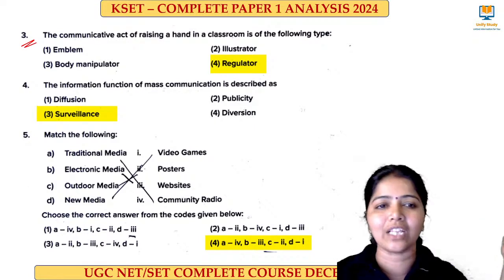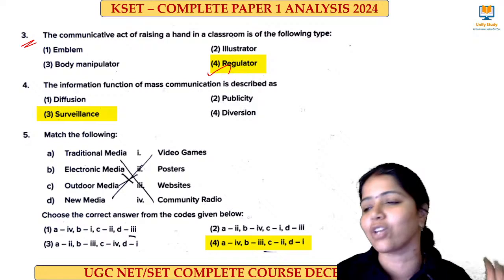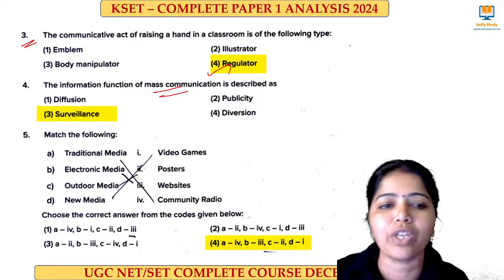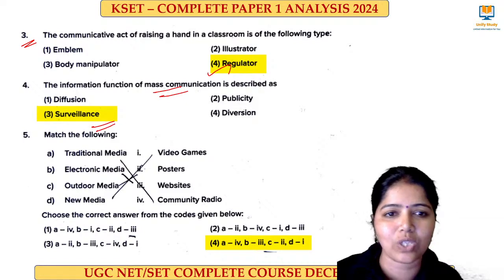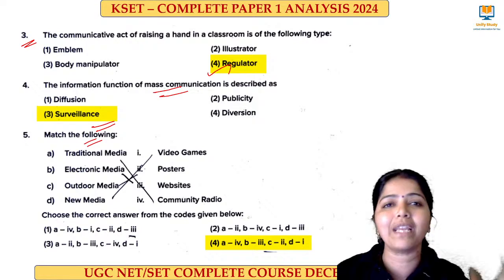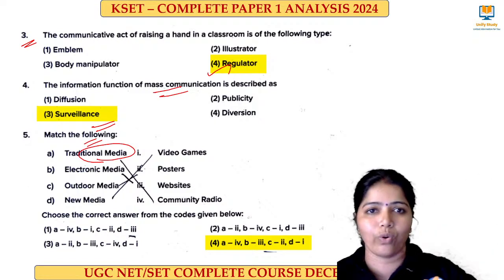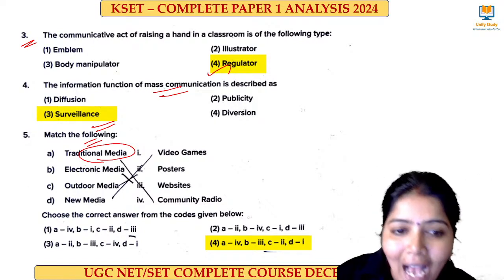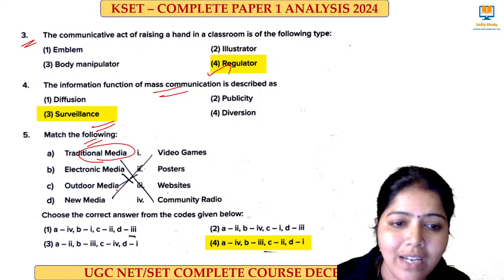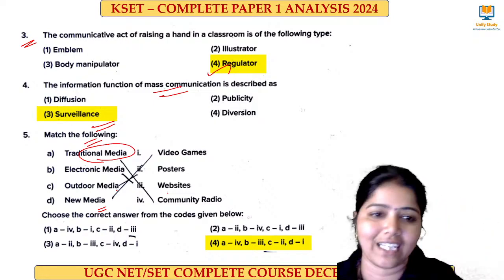Question number 3: the communicative act of raising a hand in a classroom — we call it a regulator. This is also a previous year question. Information function of mass communication is described as surveillance — also a previous year question. A question from communication on traditional media and electronic media: traditional media means radio; electronic media, we say website; outdoor media, posters; new media, we call video games. So option 1 is the right answer.